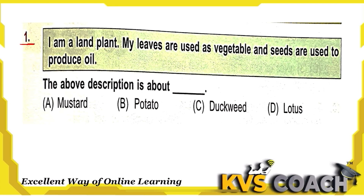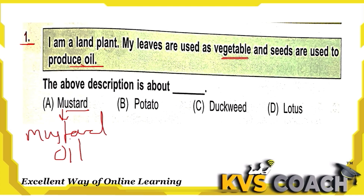Question 1: I am a plant. My leaves are used as a vegetable and my seeds are used to produce oil. The answer is mustard — we eat mustard leaves as a vegetable, and mustard seeds produce mustard oil. So this is the right answer.